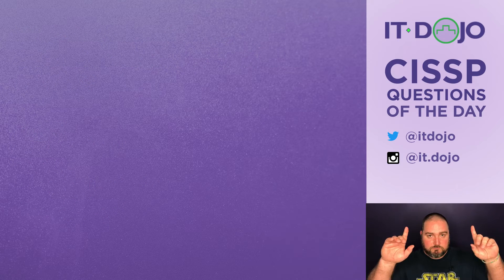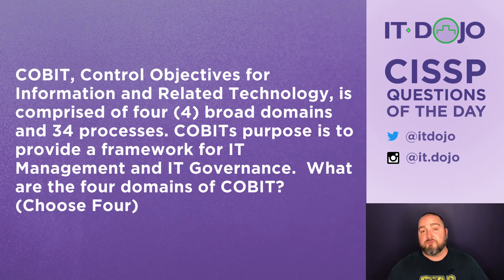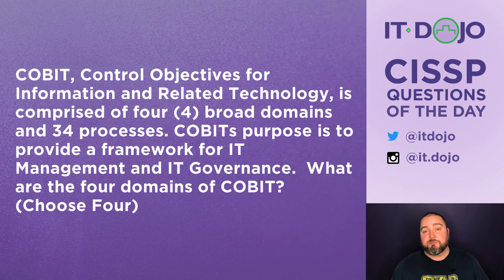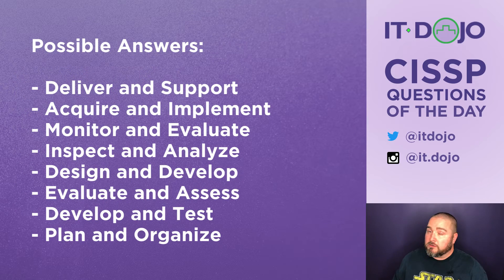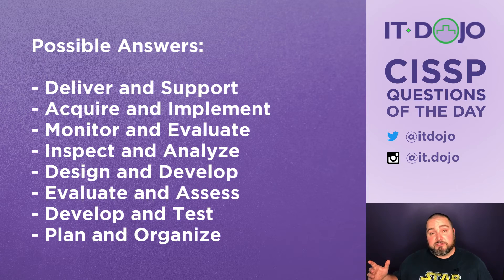Question number two. COBIT — Control Objectives for Information and Related Technology — is comprised of four broad domains and 34 different processes. COBIT's purpose is to provide a framework for IT management and IT governance. Of the choices listed, which four comprise the broad domains of COBIT? Go ahead and click pause, think about the answers, then click play and we'll break it down.